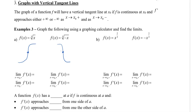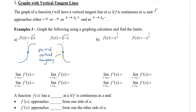Now at these two points here, which I've outlined — right here and right here — we actually have a vertical tangent. These points are called points of vertical tangency, so that's here and also right here.